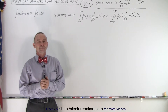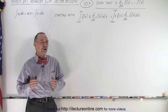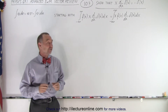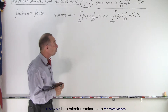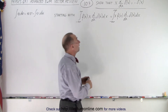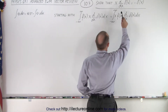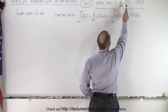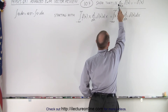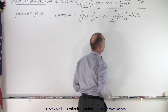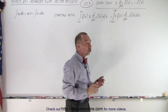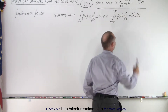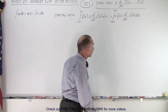Welcome to our lecture online. Another very useful form of the Dirac delta function is when the derivative of the delta function is multiplied by x. We can show that that is equal to the negative delta function of x.